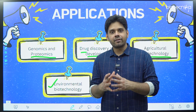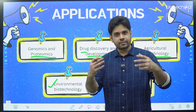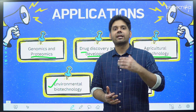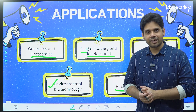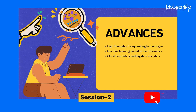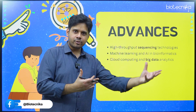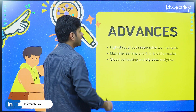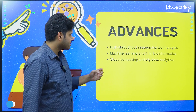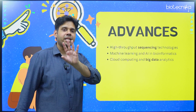We will resume further applications and impacts of bioinformatics in the next session. Now, let's look at technological advances. Advancement in bioinformatics is very fast — unlike biotech, where it takes 10 years for something new; in bioinformatics, new advancements come up almost every day. Key areas include high-throughput sequencing technology, machine learning and artificial intelligence in bioinformatics, and cloud computing with big data analytics.